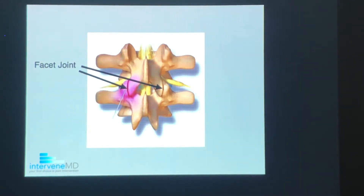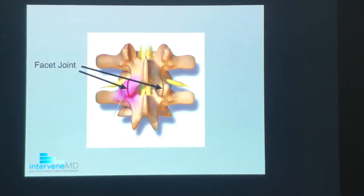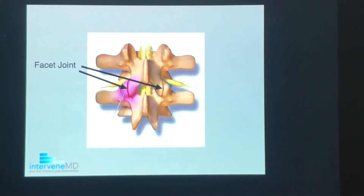It's a major area where the backbones of your spine communicate with each other from above and below. This particular image is of your lumbar or low back facet joints because the joints are vertically oriented. In your neck or cervical spine these joints are horizontal, which allows your neck to rotate more freely.